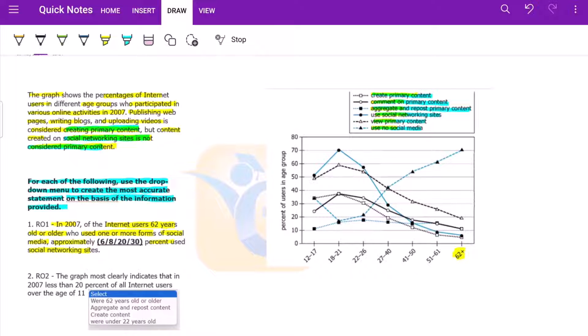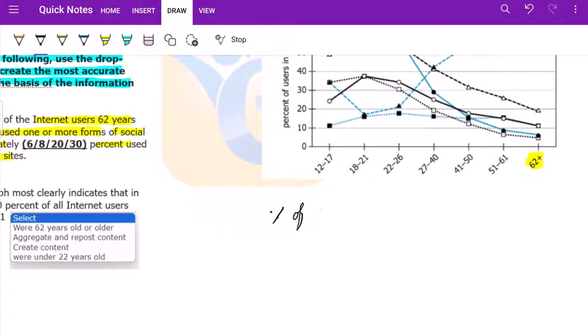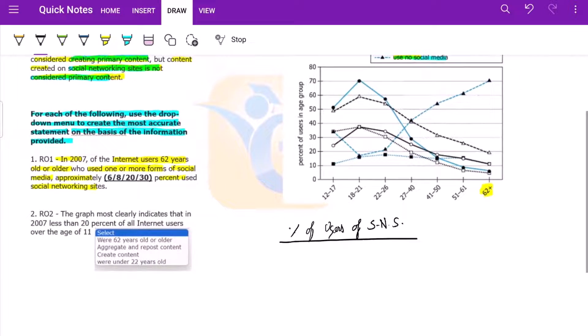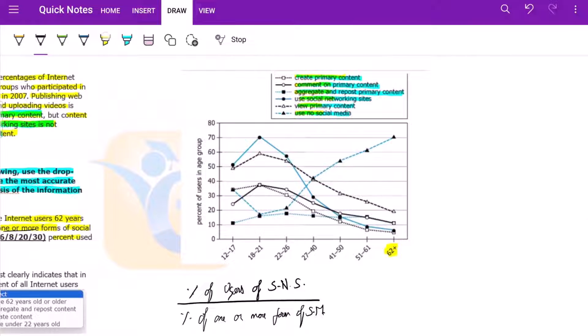So basically what we are being asked is percentage of users of social networking sites divided by one or more form of social media. Percentage of one or more form of social media. Let us see what do we have here. A percentage of users of social networking site.